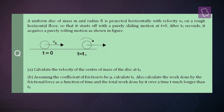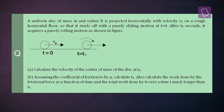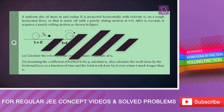A uniform disk of mass m and radius r is projected horizontally with velocity v₀ on a rough horizontal floor, so that it starts off with a purely sliding motion at t equal to zero. After t₀ seconds it acquires a purely rolling motion as shown in the figure. Calculate the velocity of the center of mass at t equal to zero, and assuming the coefficient of friction to be μ, calculate t₀. Also calculate the work done by the friction force as a function of time and the total work done over a time t much longer than t₀.